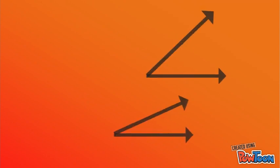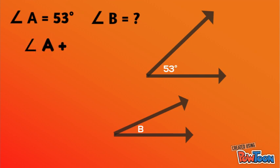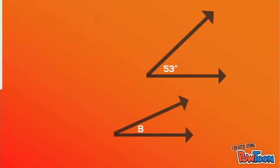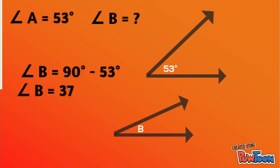We're going to apply the same procedure to these given angles. Angle A measures 53 degrees and we're going to find the measure of angle B. Using the formula for complementary angles, we substitute the value of A. We can simply subtract 53 degrees from 90 degrees to find the measure of angle B. Therefore, angle B measures 37 degrees.